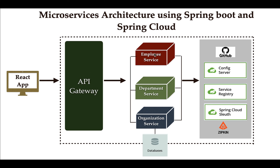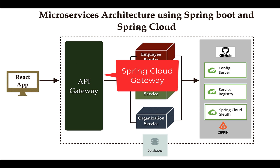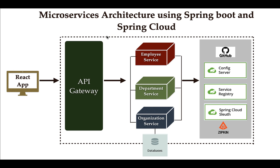Whenever a client sends a request to the backend microservices, the client sends it to the API gateway, and then the API gateway, based on its routing rules, routes that request to the appropriate microservice. Spring Cloud provides the Spring Cloud Gateway module to implement the API gateway pattern in a microservices architecture.